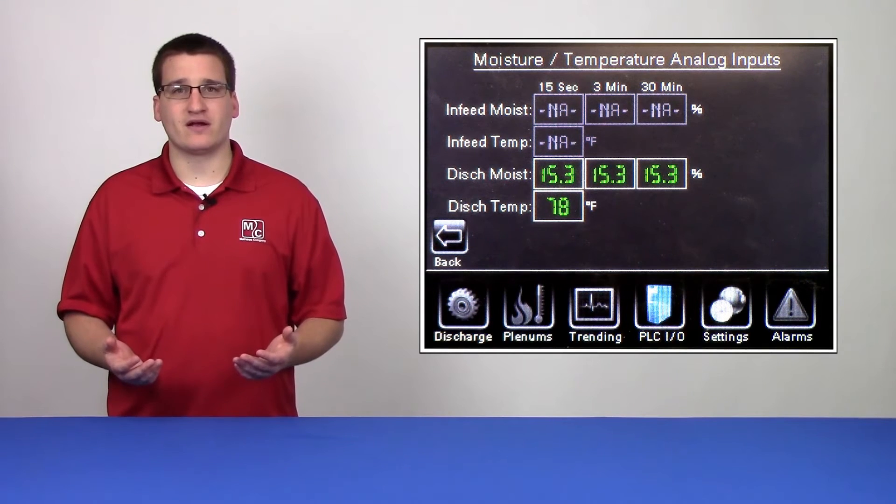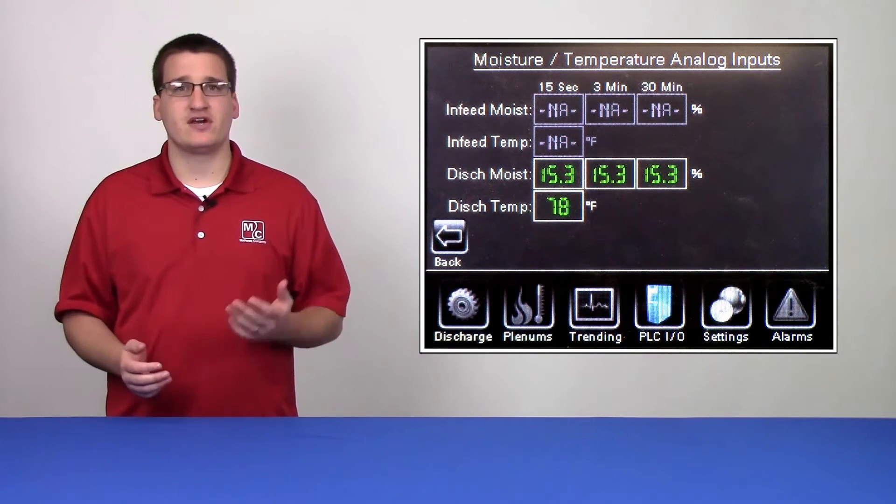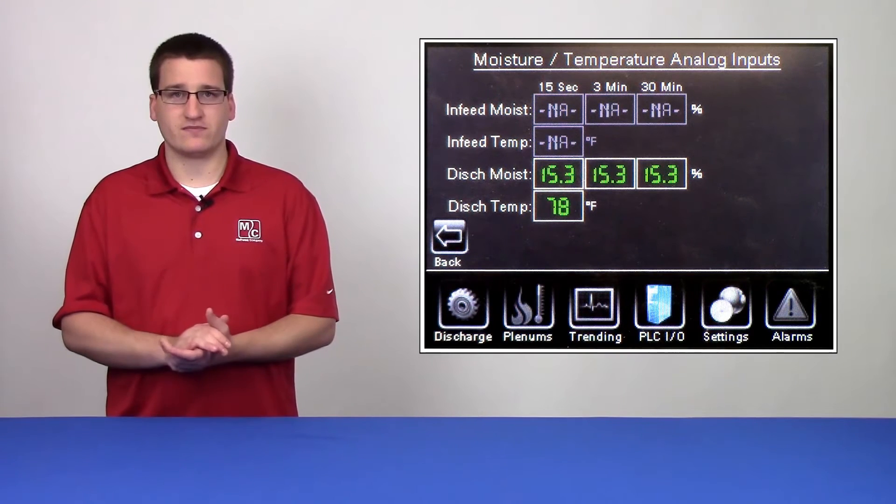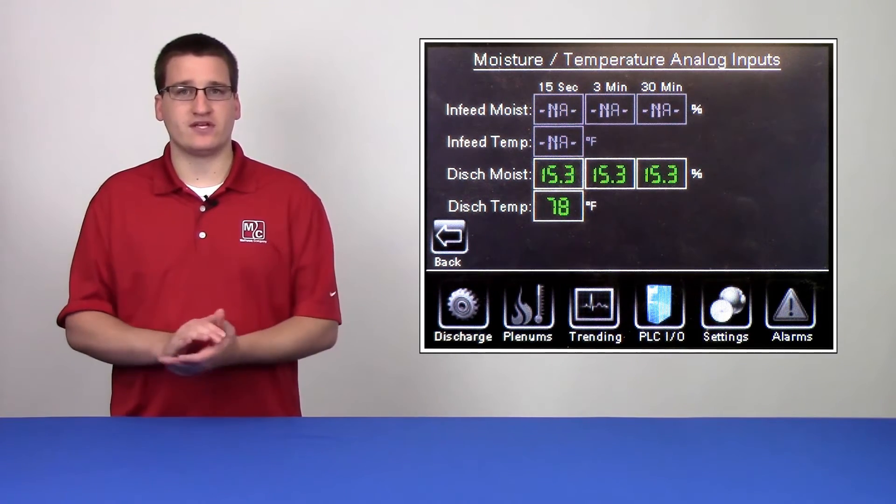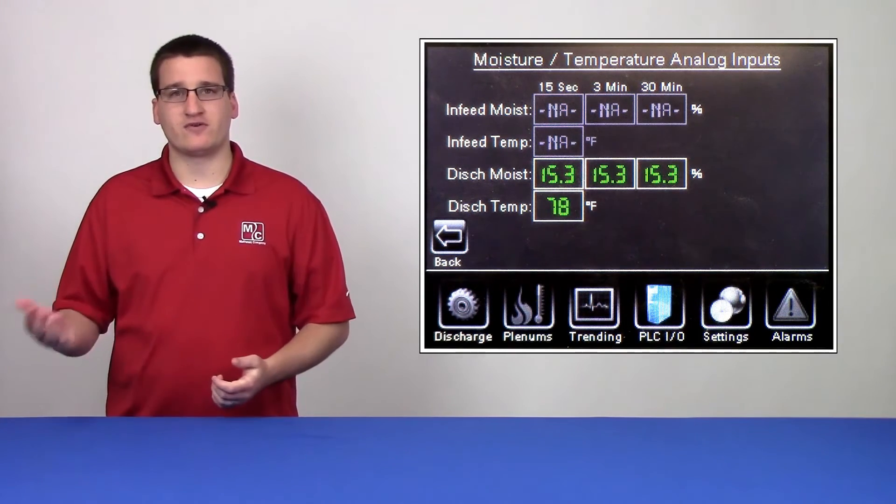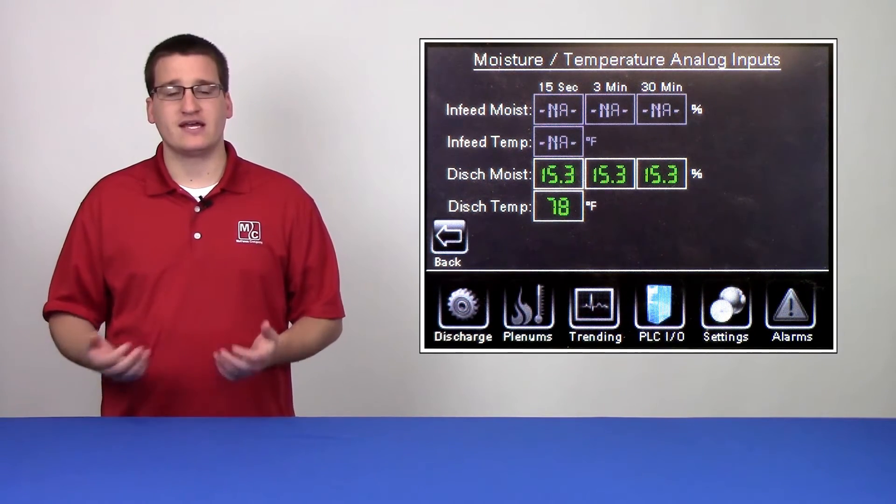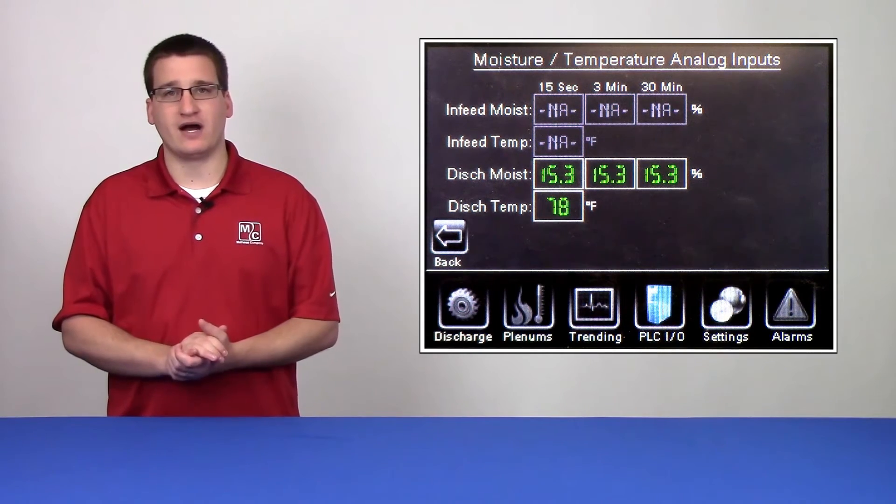Next, we'll compare the dryer's result on the 15 second average versus the tester's result. If we say that the tester in this example read 14.3 on average and our dryer read 15.3, that tells us that the dryer is reading 1.2 high.